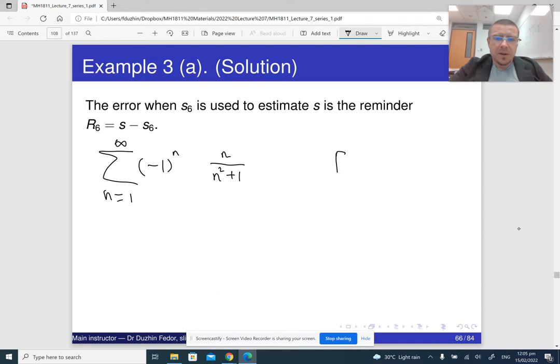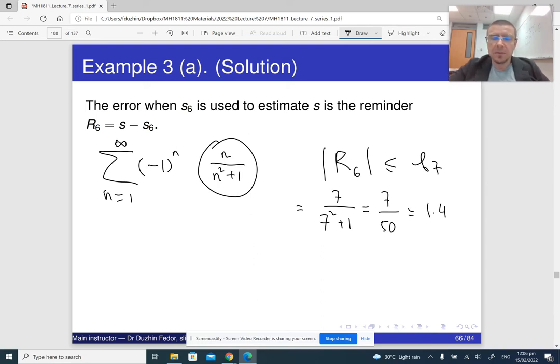All right, so R_6 is the error of the approximation with the sixth sum, and we know that the sixth error is less than or equal to B_7. So we should take this and plug in 7 for n. So B_7 is going to be 7 divided by 7 squared plus 1, which is 7 over 50, which is, I think, 1.4? No, stop. Oh, it's 0.14.